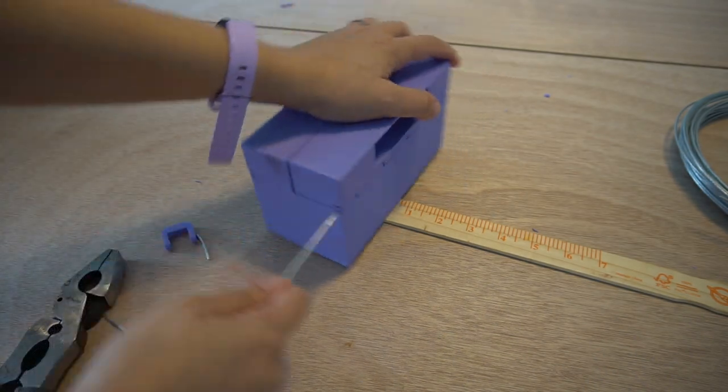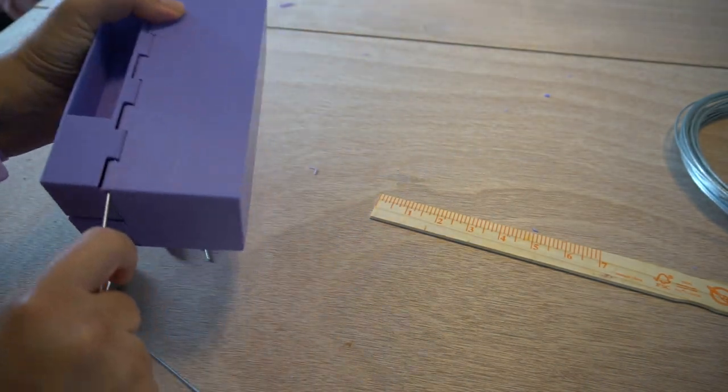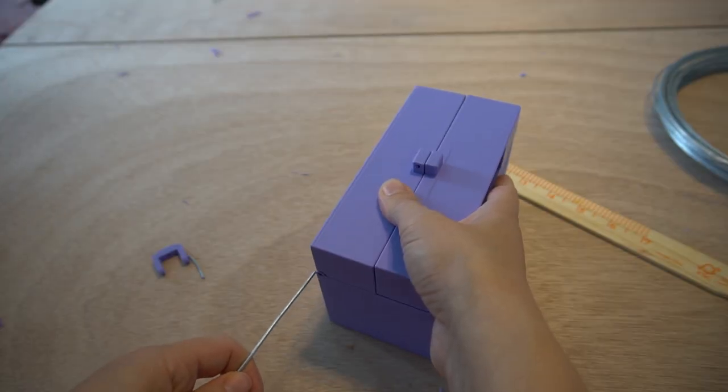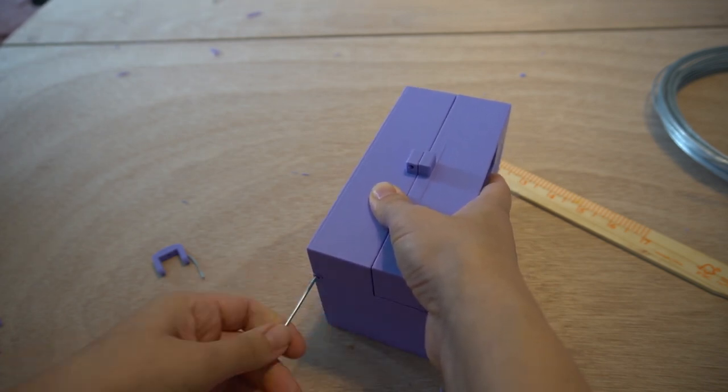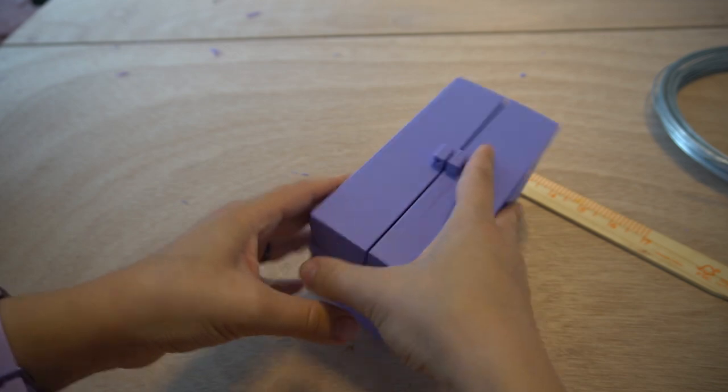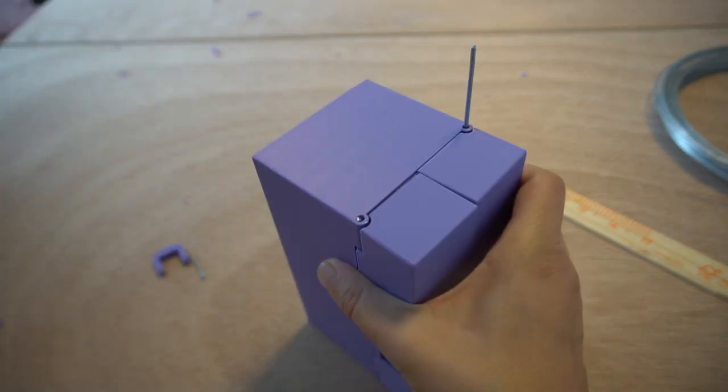Insert wires through both hinges. There should be no wire sticking out. The wire should be slightly shorter than the hinge. If a wire is sticking out, trim it off with the wire cutter.